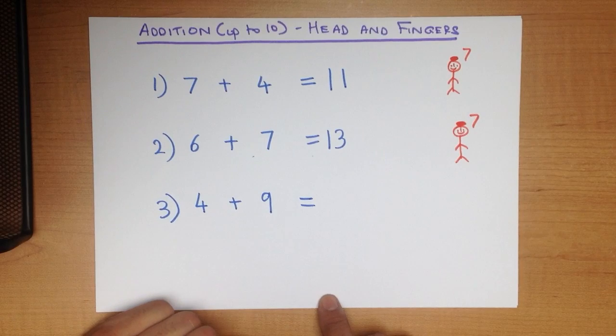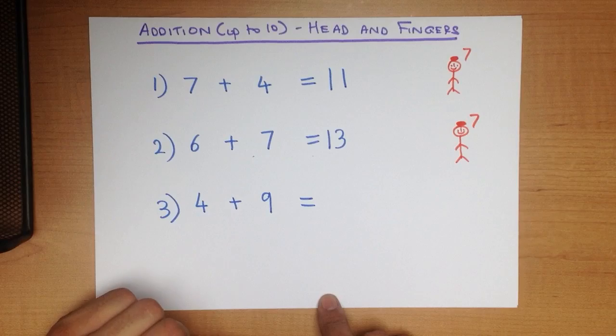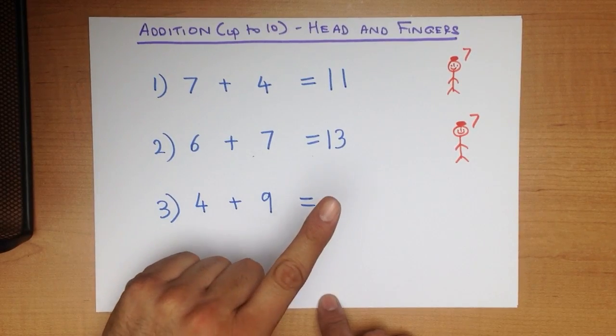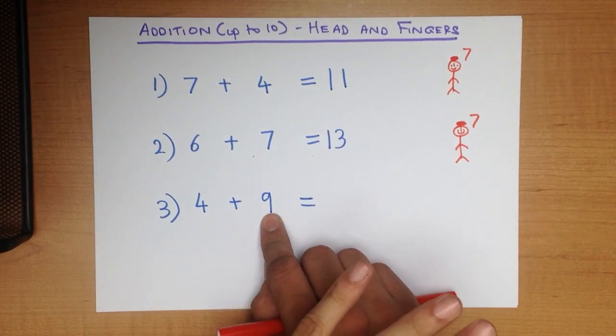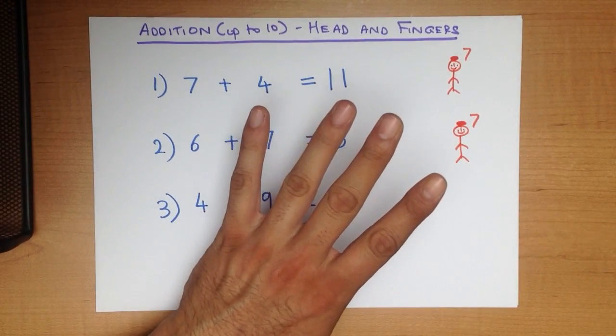And the 4, we use the 4, we hold out 4 fingers. So we say 1, 2, 3, 4. 9 is on my head, 4 is on my hand.